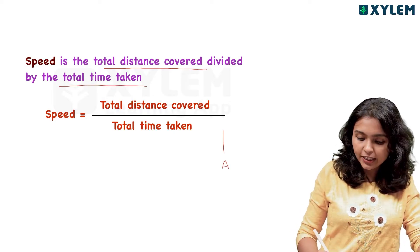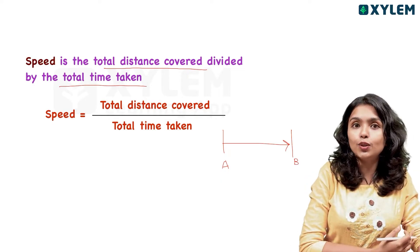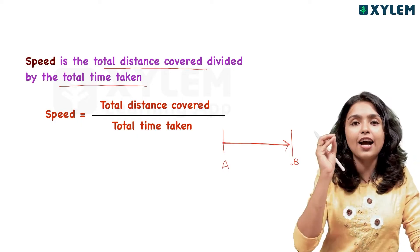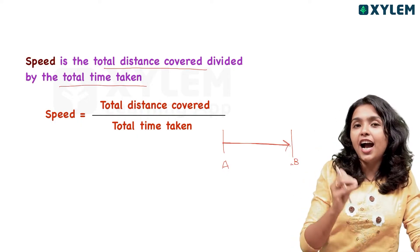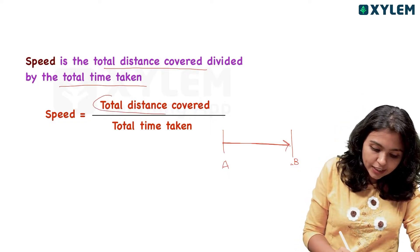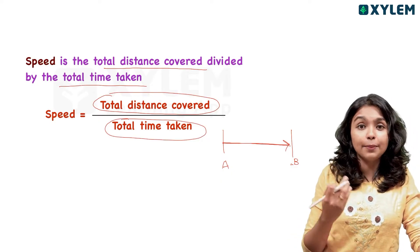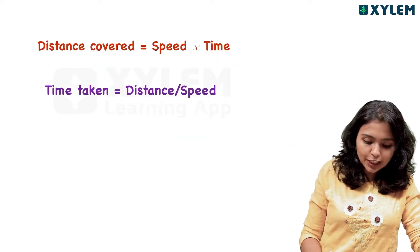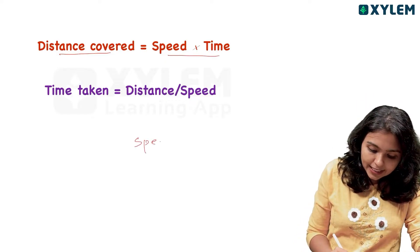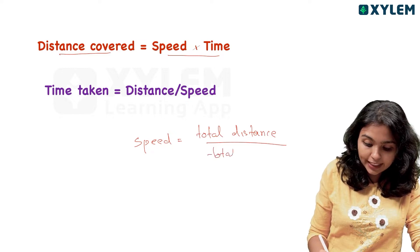Now we are going to talk about the position. The speed is calculated as total distance divided by total time taken. This is a simple equation. The equation is: distance is equal to speed multiplied by time. This is the total distance divided by total time.